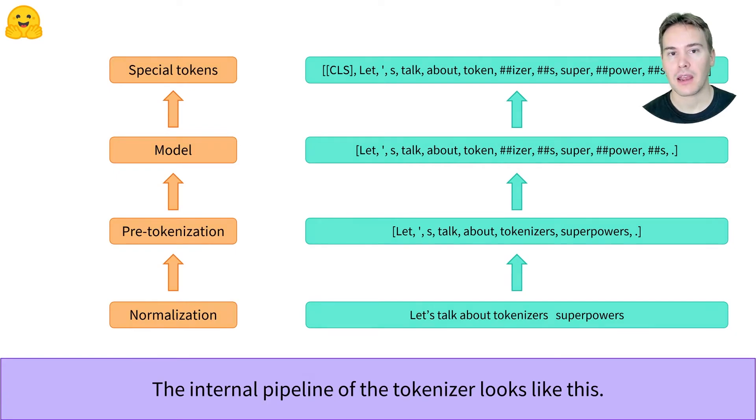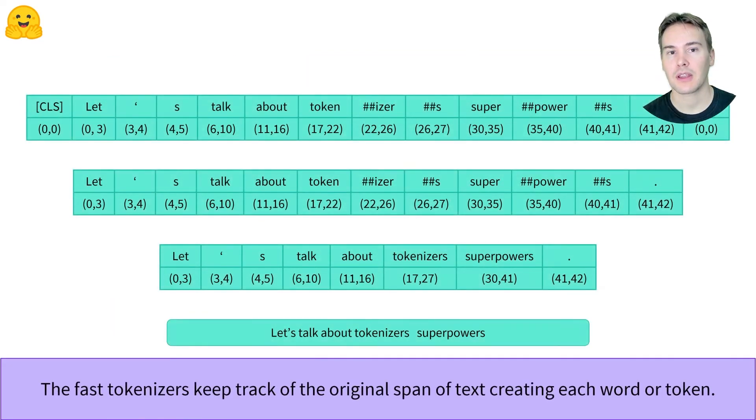From the beginning to the end of the pipeline, the tokenizer keeps track of each span of text that corresponds to each word, then each token.